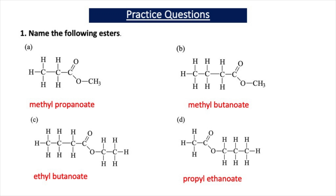So now let's have a go at naming these esters. The first ester has a CH3 attached to the oxygen, so the first part of this name is methyl. The rest of this molecule resembles propanoic acid, so the ester's name is methyl propanoate. And if I look at 1B, this ester once again has a CH3 next to the oxygen, so its first part of the name is methyl. The rest of the ester resembles butanoic acid, so the ester is methyl butanoate.